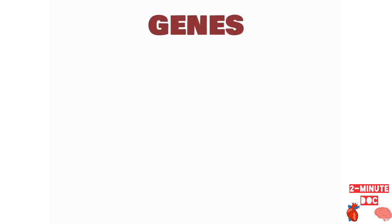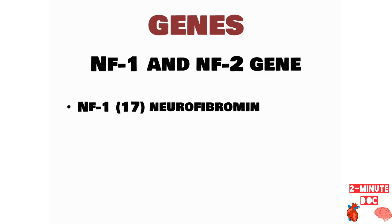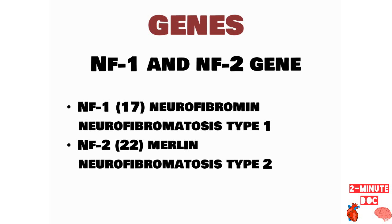Let us look at the genes involved in neurofibromatosis. There are two genes: the NF1 gene and the NF2 gene. The NF1 gene is located on chromosome 17 and encodes for the protein neurofibromin. If it is mutated, it leads to neurofibromatosis type 1. The NF2 gene is located on chromosome 22 and encodes the protein Merlin. If it is mutated, it leads to neurofibromatosis type 2.